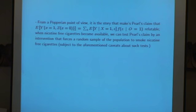So from a Popperian point of view also, it is the story that makes Pearl's claim refutable. Because when nicotine cigarettes become available, we can test his claim by intervention that forces a random sample of the population to smoke. So by telling me that story, he went back to a manipulous interpretation. And in many, many, but not all examples, that can be done.